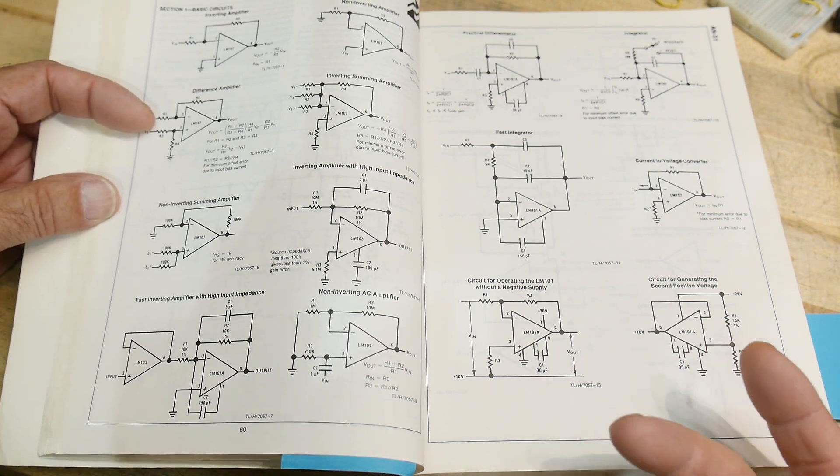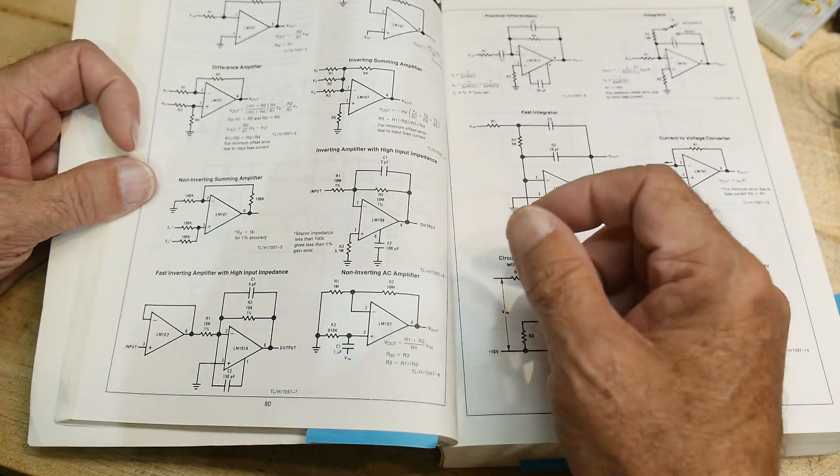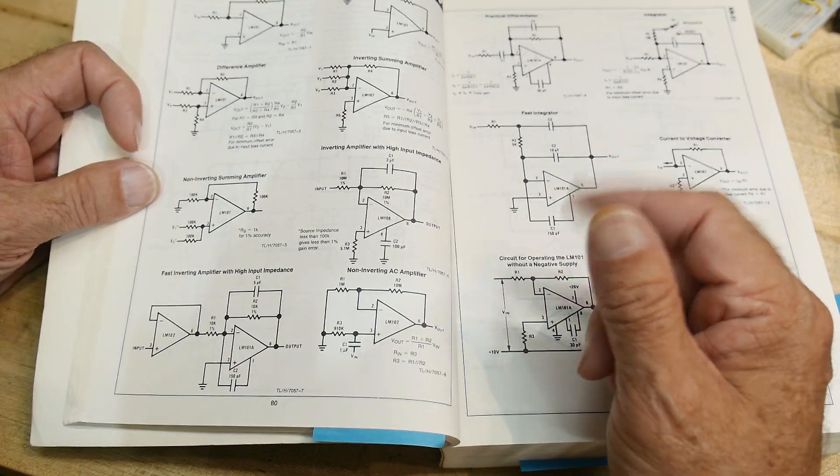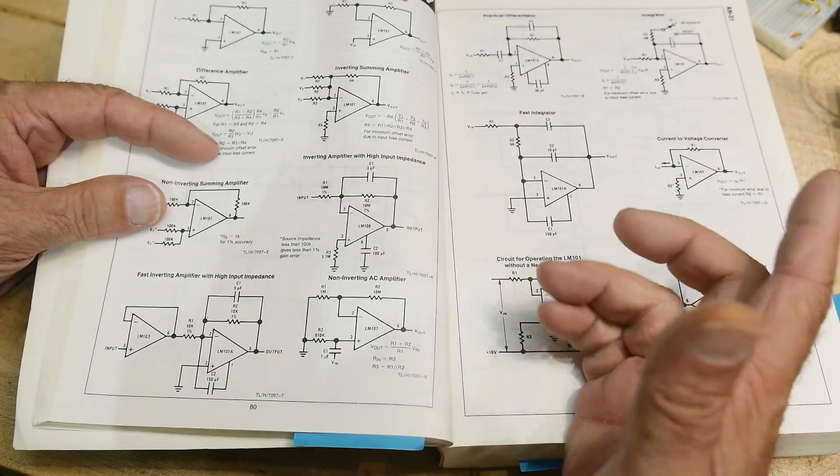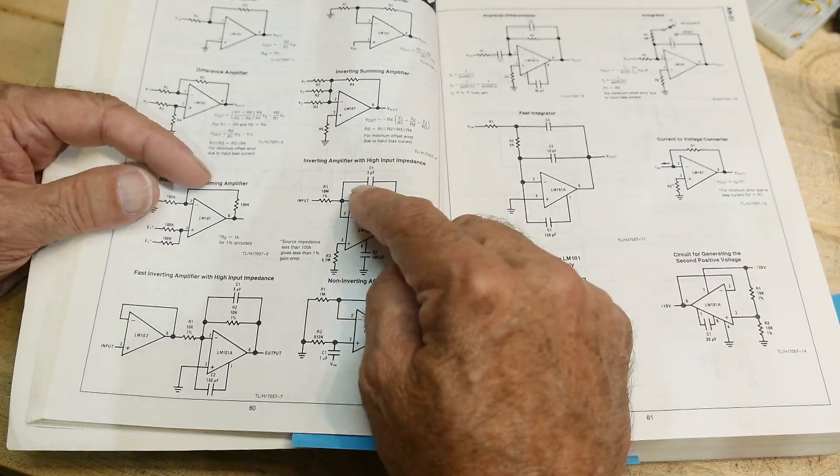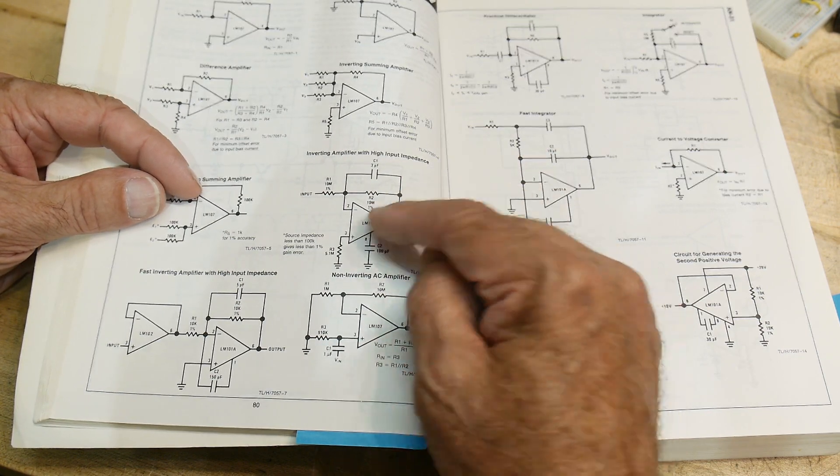Once you've learned it from maybe a textbook and stuff, come here and start looking at a few and say, oh, that's why they did it that way. Or, I wonder why this one has that 3 picofarad capacitor in there. What's that 3 picofarad capacitor? That does nothing. Why is it in there? Right?